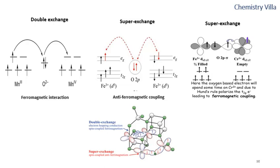These magnetic interactions, which operate in the molecular magnet, can enhance the magnetism — that means the magnetization of the molecule — or they can decrease magnetization, depending on which kind of interaction is operating. For example, ferromagnetic interaction will increase magnetization, and antiferromagnetic coupling will decrease magnetization.